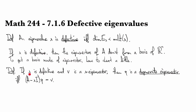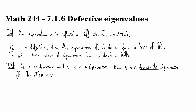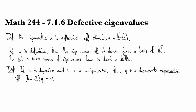So we say that if lambda is defective, and if v is a lambda eigenvector, then eta is a degenerate eigenvector if when you multiply it by (A - lambda I), instead of getting zero, you get the eigenvector that you had back at the beginning.